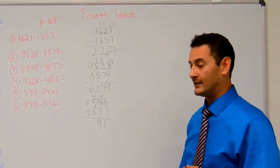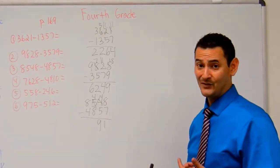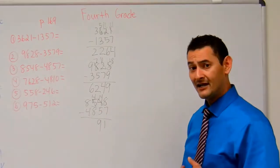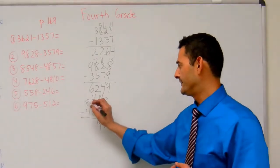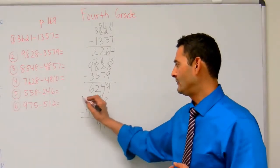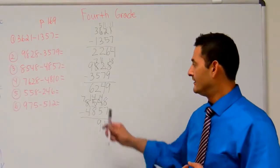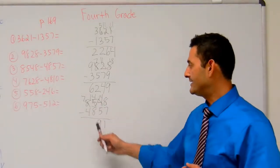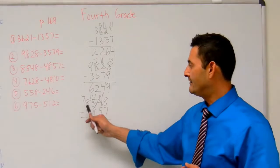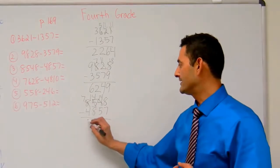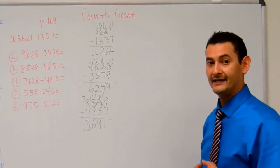Now let's look at the 100's place. 4 minus 8 — I can't do that. I'm going to borrow 10 10's from the 1,000's place. That will become a 7, and that will become a 14. 14 minus 8 — that's going to be 6. And then 7 minus 4 — that's going to be 3. The answer is 3,691.